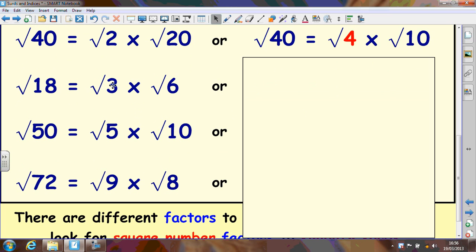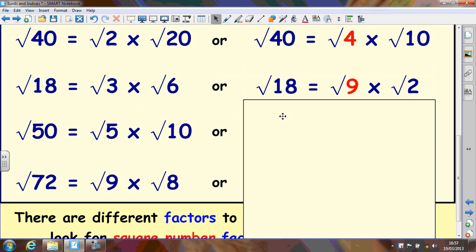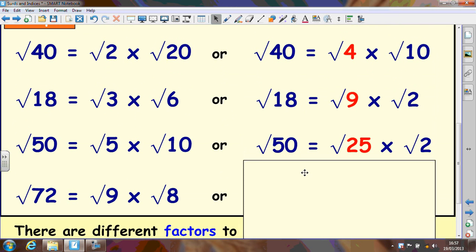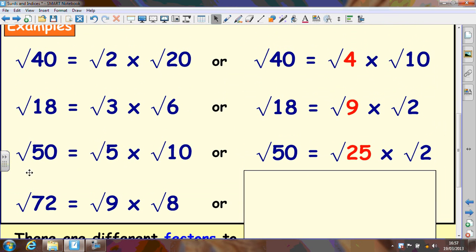The same with this. Root 18 can be written as root 3 times root 6. But better to split it up into one which is a square number which is 9. Root 9 times root 2 makes root 18. Again root 50 could be split up into root 5 times root 10. But better to split it up into root 25 times root 2 because this actually square roots.